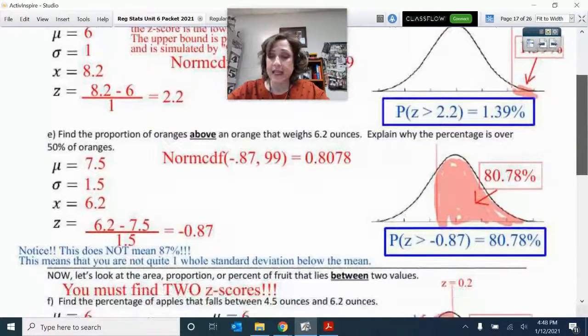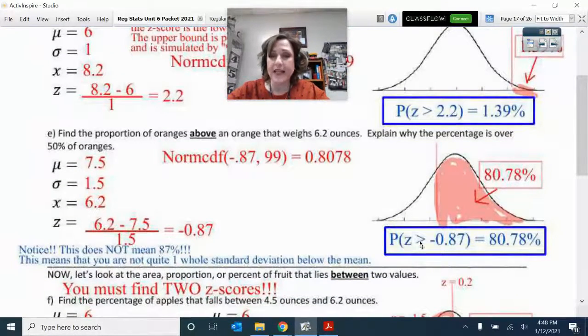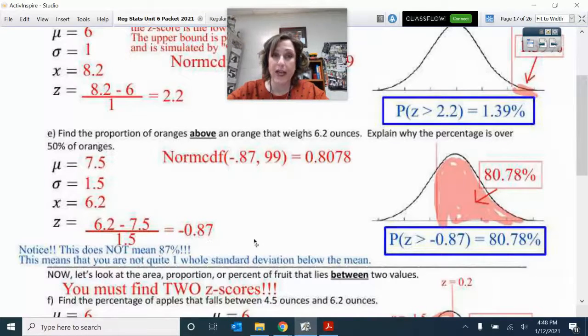On our next one, when we're going above, we have the probability that Z score was greater than negative 0.87. Now, it's a little trickier when you go in between two values, so let's take a look at that.